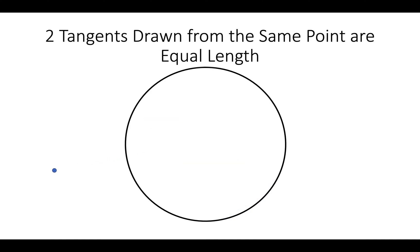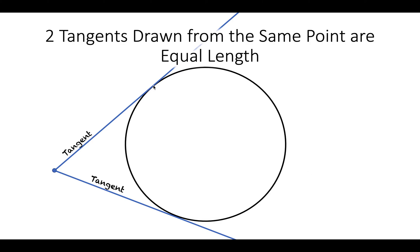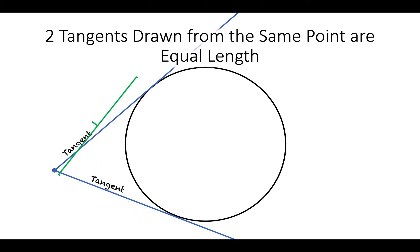Two tangents drawn from the same point are equal length. So we've got one tangent drawn here and another tangent drawn there. Tangents are just lines that only touch the circle once — this line here just touches it once, absolutely skims the edge of the circle. That's a perfect tangent. The length from the point to where it touches the circle is the same for both lines. So two tangents drawn from the same point are equal length.